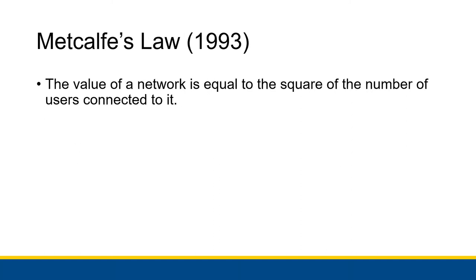The next law we're going to talk about is Metcalfe's Law, named after the inventor of the ethernet, Robert Metcalfe. It wasn't actually said by him — this was formulated in 1993 by a guy named George Gilder — but the formulation is that the value of a network is equal to the square of the number of users connected to it. So the more people that are connected to a certain network, the more valuable that network is. This was formulated before we actually had the World Wide Web, back when there were much smaller networks owned by specific entities, saying: the more devices you got on that network, the more valuable that network is.